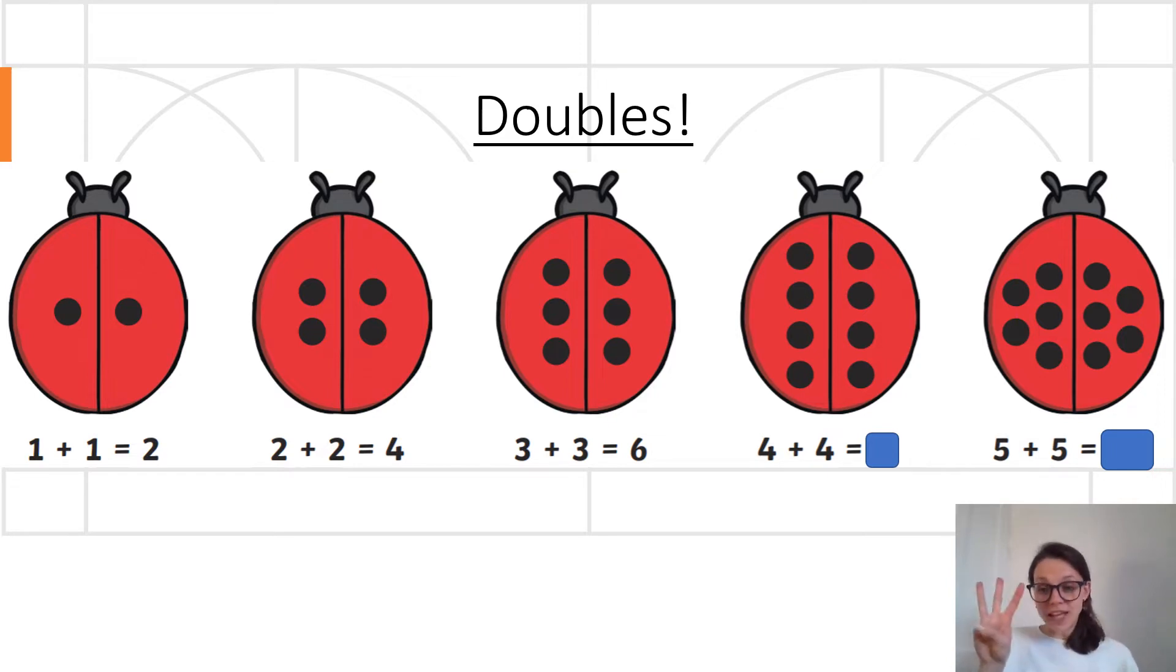Moving on then. Three and three. Should we count them together? One, two, three, four, five, six. Three add three or double three is six. Well done.